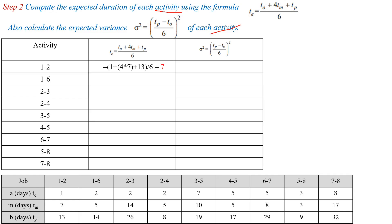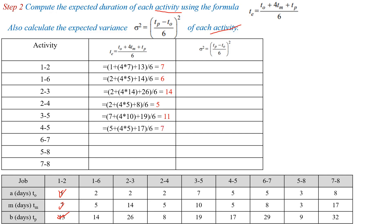For activity 1 to 2, T0 is 1, TM is 7, and TP is 13. Then TE = (1 + 4×7 + 13) / 6, which gives TE = 7. Similarly, for activity 1 to 6 TE = 6; activity 2 to 3 TE = 14; activity 2 to 4 TE = 5; activity 3 to 5 TE = 11; activity 6 to 7 TE = 11; activity 4 to 5 TE = 7; activity 5 to 8 TE = 4.